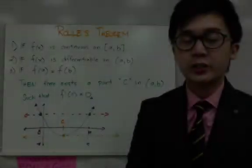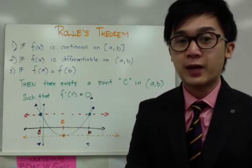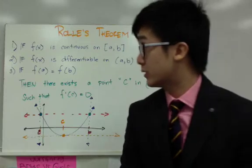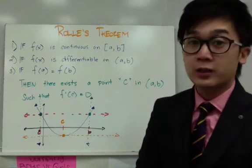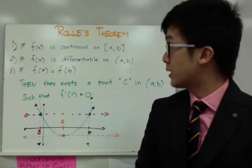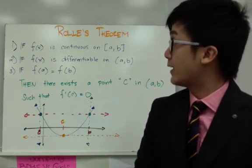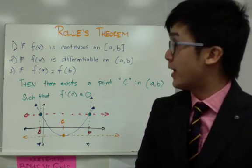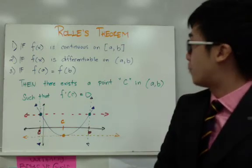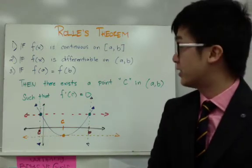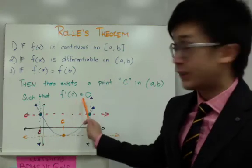To verify a function using Rolle's Theorem, we need to satisfy these conditions. If f of x is continuous on the closed interval [a, b], and if f of x is differentiable on the open interval (a, b), and if f of a is equal to f of b, then there exists a point c in the open interval (a, b) such that f prime of c is equal to 0.